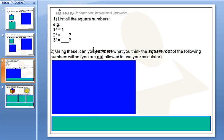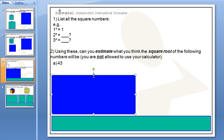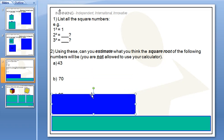Can you list all the square numbers you can think of and then use these to try and work out the square roots of squares that are not perfect, like the square root of 43, resulting in a decimal answer, or the square root of 70?